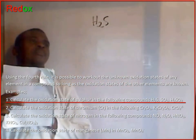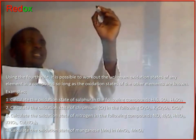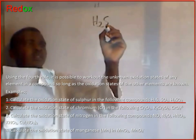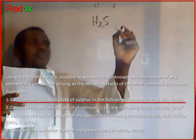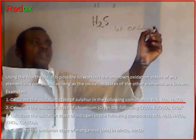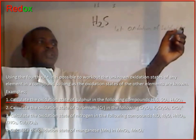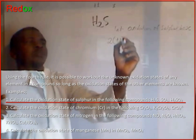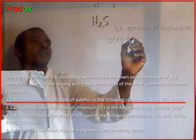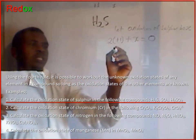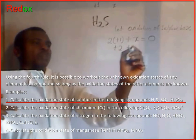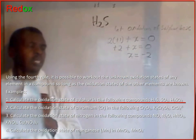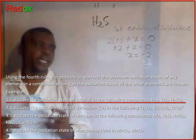Hydrogen sulfide. We know that the oxidation state of hydrogen is plus 1. Let the oxidation state of sulfur be x. We have 2 times plus 1 plus x equals 0, which gives plus 2 plus x equals 0. Taking plus 2 to the other side, x equals minus 2. The oxidation state of sulfur in hydrogen sulfide is minus 2.